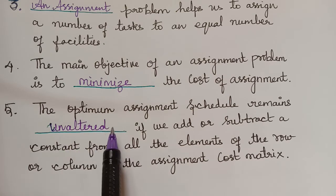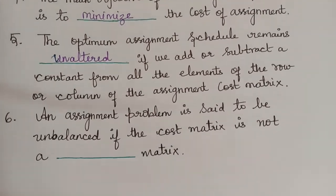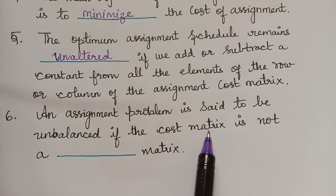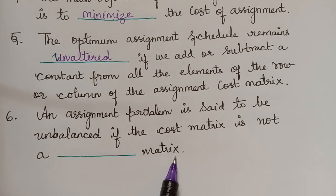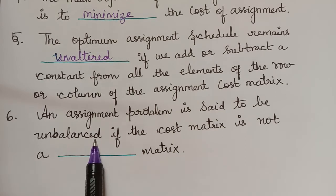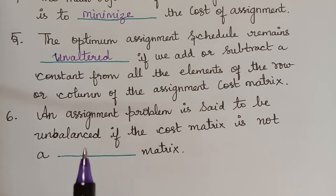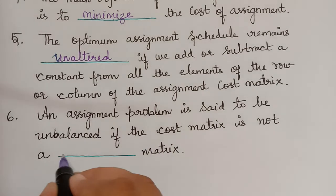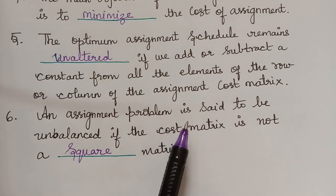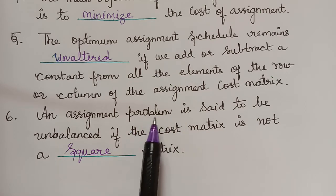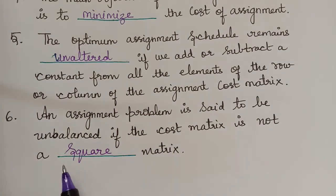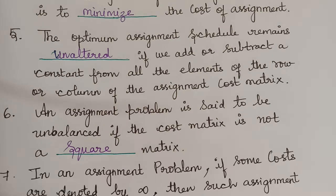The answer is unaltered. The next question is: an assignment problem is said to be unbalanced if the cost matrix is not a square matrix. That is, when the number of rows is not equal to the number of columns, the cost matrix will not be a square matrix, and the problem is considered unbalanced.